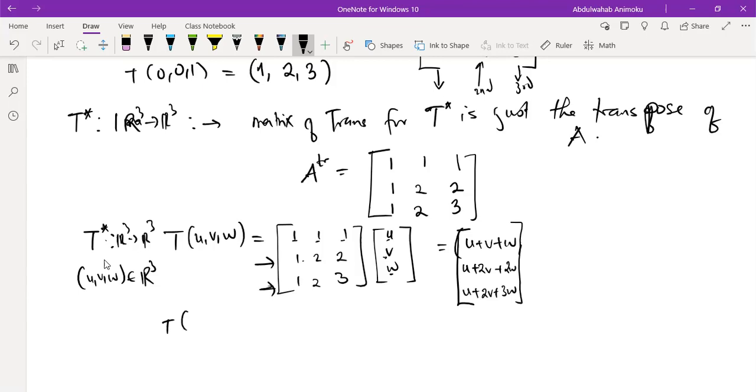Now if you write this in relation to the basis for R³, remember the basis for R³ is e₁, e₂, e₃. So because of that, we can basically write this vector as what?